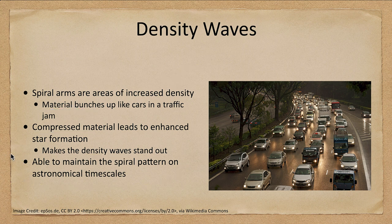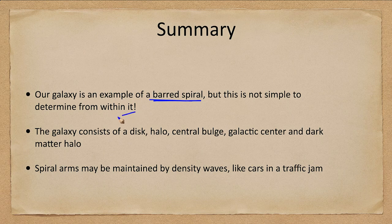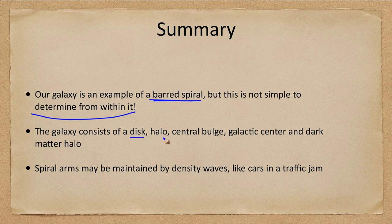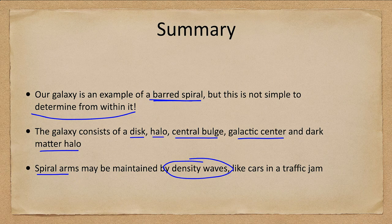So let's go ahead and finish up with our summary. Our galaxy is an example of a barred spiral but it's not easy to determine that from within the galaxy. The galaxy consists of a disk, halo, central bulge, the galactic center, and a dark matter halo. The spiral arms may be maintained by density waves much like cars in a traffic jam.